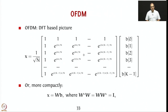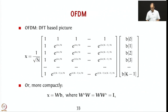We will now recall our DFT-based picture. Technically, you can use the inverse DFT matrix — which has entries 1, 1, 1, 1; 1, j, -1, -j; and so on — to enable this kind of modulation, wherein your symbols are put in parallel frequency bins.